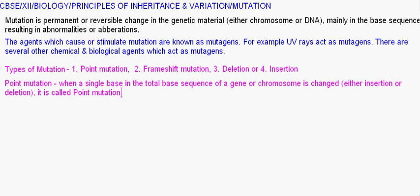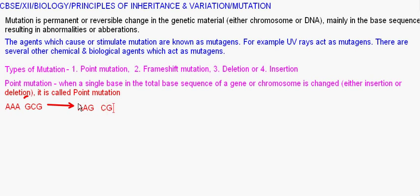For example, suppose the base sequence is A, A, A, G, C, G. Now one base can be included or one base can be excluded. Suppose the first A base is deleted — the sequence will then read A, A, G, C, G. Due to this deletion, the reading frame will also change, so this can also be called frame shift mutation. This is an example of deletion-type mutation, and it can be addition as well.